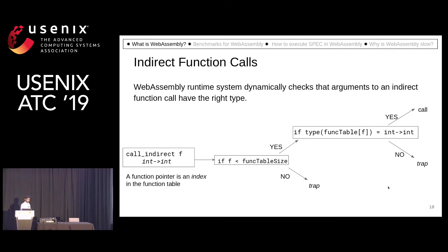That pointer must point to a valid function, and the function it points to must have the same signature as specified in that instruction. So there are two checks for every indirect function call.